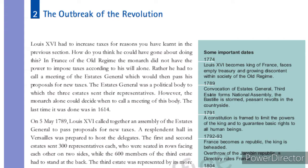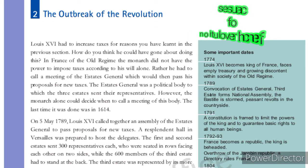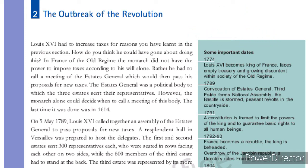Good morning everybody. The next unit is the outbreak of the revolution. Under this we'll know about what were the causes of the French Revolution. Louis XVI had to increase taxes — for reasons you have learnt in the previous section, France was running a shortage of money. The king had to increase taxes to cover that shortage, but the monarch had no power to increase taxes on his own wish.